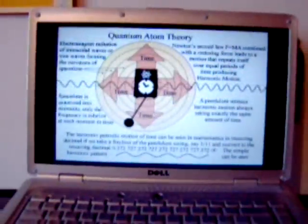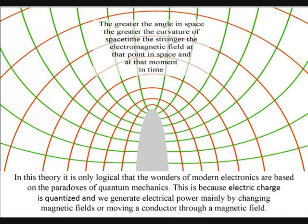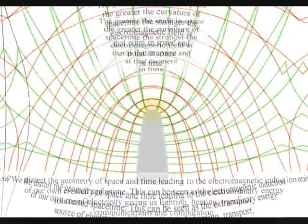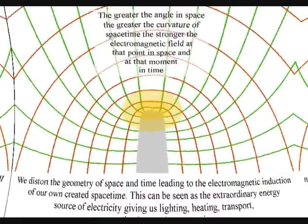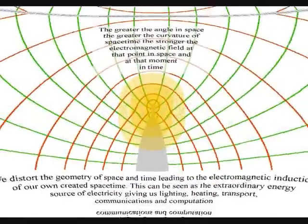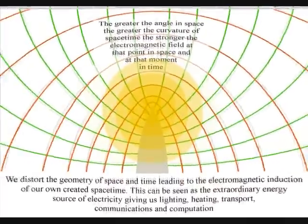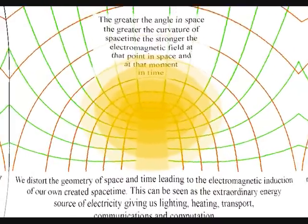In this theory it is only logical that the wonders of modern electronics are based on the paradoxes of quantum mechanics. This is because the electric charge is quantized, and we generate electrical power mainly by changing magnetic fields, or moving a conductor through a magnetic field. This will distort the geometry of space and time, leading to the electromagnetic induction of our own created spacetime, in other words, electricity.